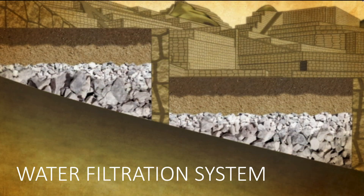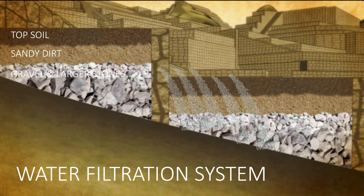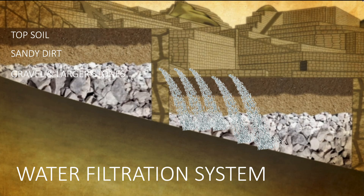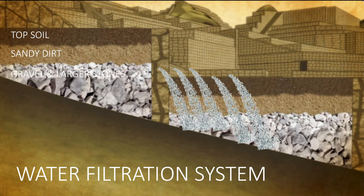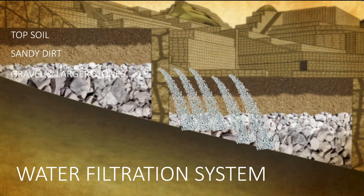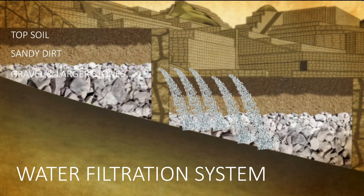Each terrace had a layer of topsoil, then sandy dirt, then gravel, and then larger stones. This filtered water slowly and safely, resulting in almost no erosion — it essentially worked as an advanced water filter.